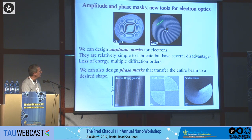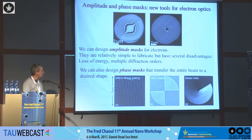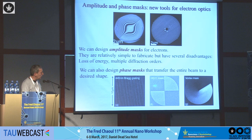We can also do phase masks. In the phase mask, we just change the thickness of the silicon nitride. A thickness of around 40 nanometers is sufficient to generate a phase shift of pi. By just changing the thickness, we can generate any phase variation between 0 and 2 pi. Examples include an off-axis vortex beam, an on-axis vortex beam using a spiral phase plate where the thickness varies in a spiral manner, and a mode where two quadrants have a pi phase difference from the other two — generating a Hermite-Gauss mode.